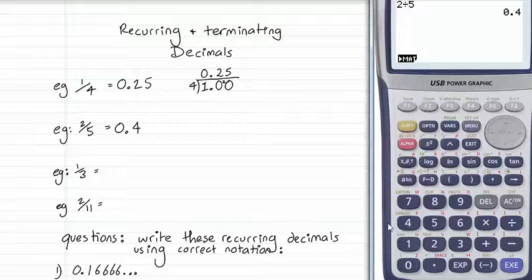1 over 3, however. Have a look what happens. 0.33333333, and it just keeps going forever, apparently.